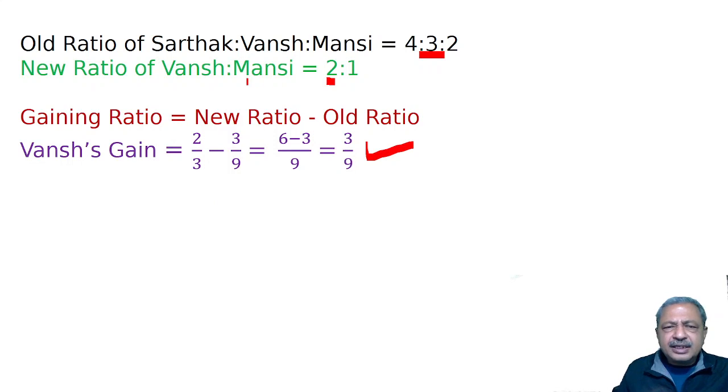And Mansi's gain is 1/3 minus 2/9. That is 1/9. 3/9, 1/9.